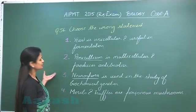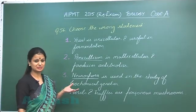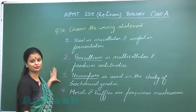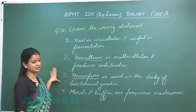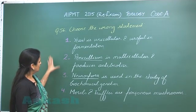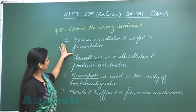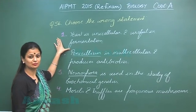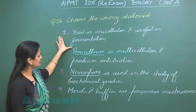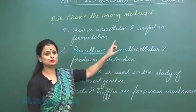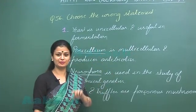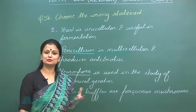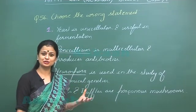Let's discuss question number 56. We have to look for the wrong statement. Option number one: yeast is unicellular, yes, and it is useful in fermentation — it is used for the production of alcohol, it is involved in alcoholic fermentation. So this one is right.